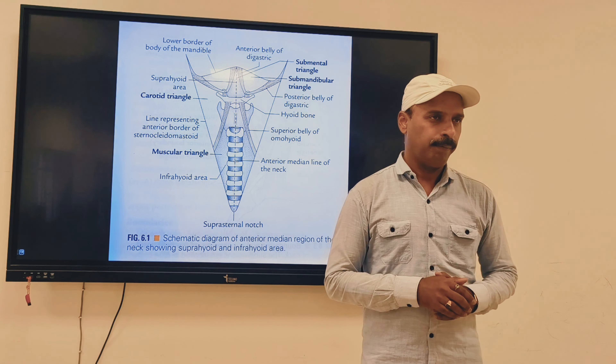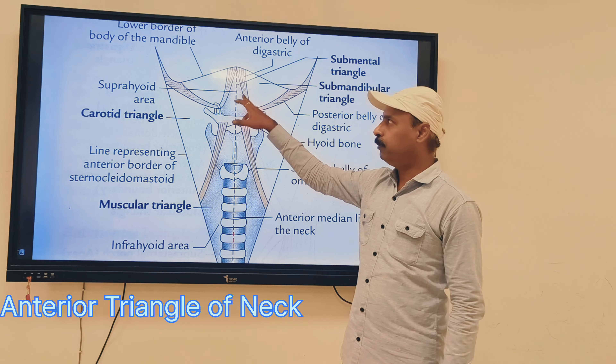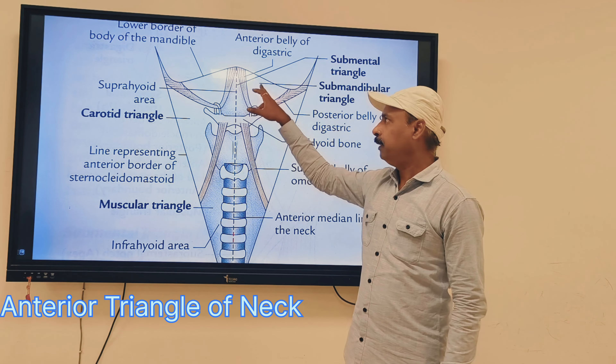On both sides you are going to get the anterior belly of digastric and posterior belly. The region in front of the sternocleidomastoid is called the anterior triangle of the neck. It is subdivided by the digastric muscle and superior belly of omohyoid into four sub-triangles. Those four sub-triangles are: submental, digastric, carotid, and muscular.